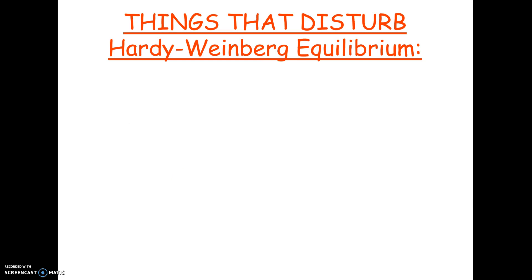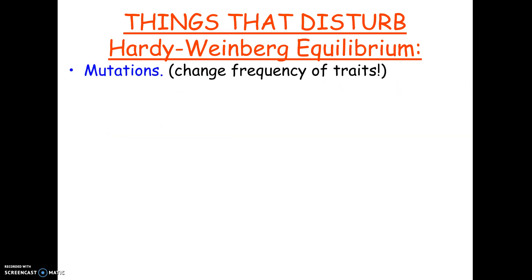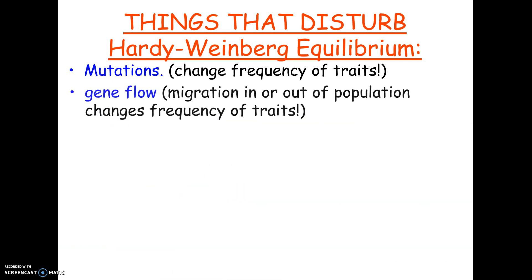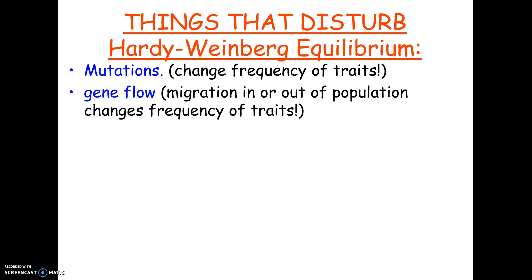Those five things are necessary to maintain equilibrium. This slide basically states the same five things in reverse — these are the things that disrupt Hardy-Weinberg equilibrium. Number one, mutations will throw off equilibrium by changing the frequency of a trait. Second, gene flow — migration in or out will change trait frequencies. For example, if all the red-eyed mice leave, or if a new group of mostly black-eyed mice merges with the original group, that's going to affect things.